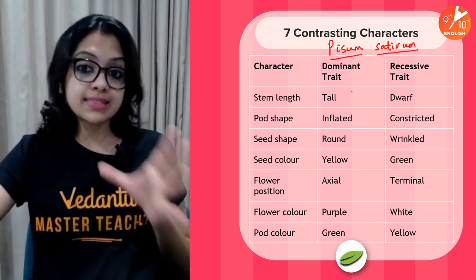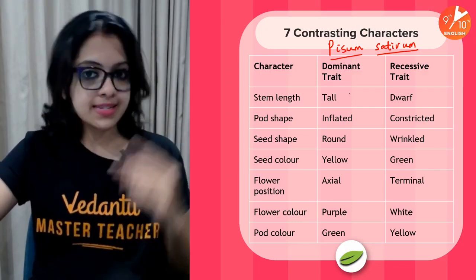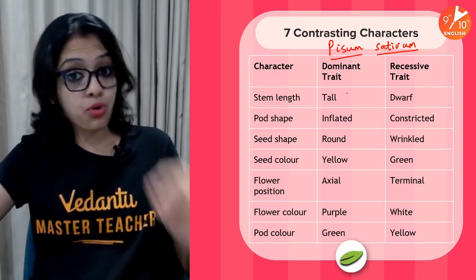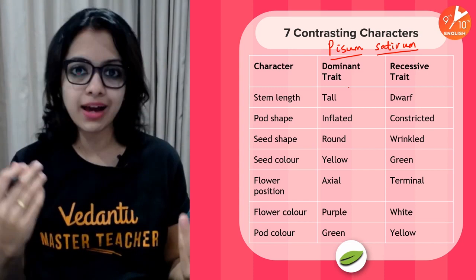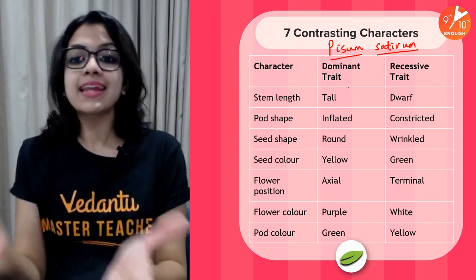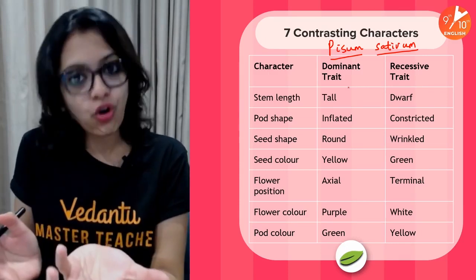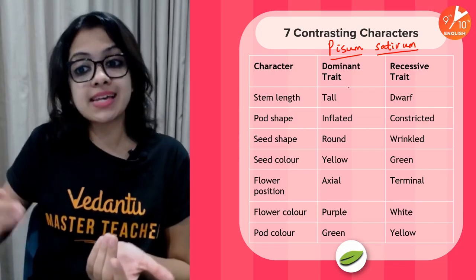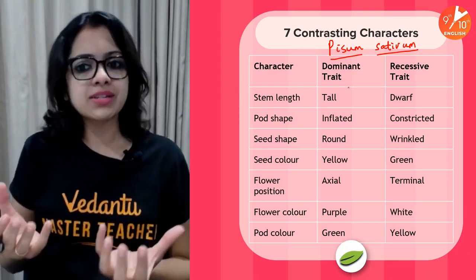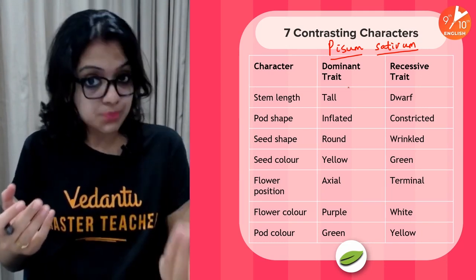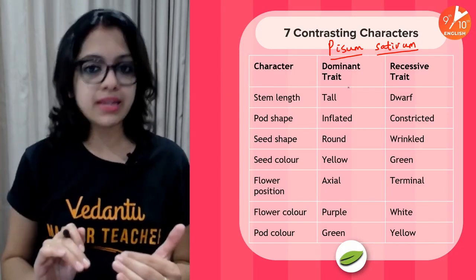Mendel decided to choose seven pairs of contrasting characters in the pea plant — stem length, pod shape, seed shape, seed colour, flower position, flower colour, and pod colour. Each character has a dominant version, which we call the dominant trait, and a recessive version, which we call the recessive trait. Dominant is that which is expressed; recessive is that which does not get expressed in the presence of a dominant allele.